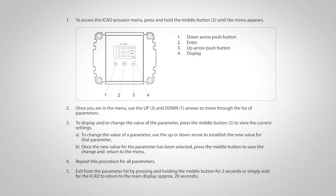To access the iCAD actuator menu, press and hold the middle button until the menu appears. Once you are in the menu, you can hit the up or down arrow to access the parameter that you want to change. To change that parameter you would hit the middle button, use the up or down arrow to change it to the value that you want. Once you've selected the value you want, you would hit the middle button again to save it in the actuator.